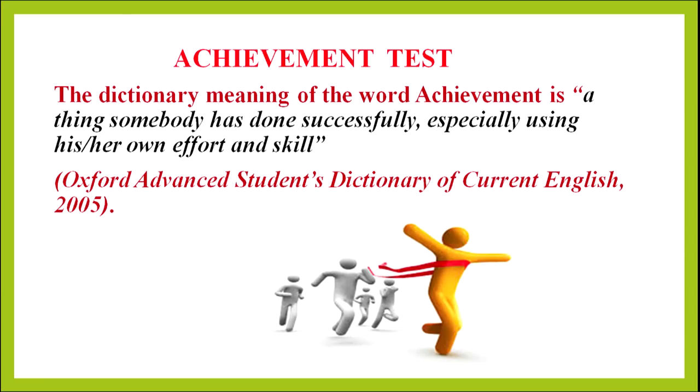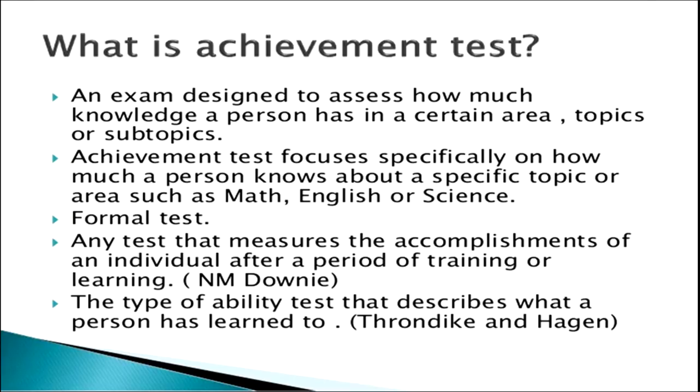We will discuss about achievement test. The dictionary meaning of the word achievement is a thing somebody has done successfully, especially using his or her own effort and skill — quoted in Oxford Advanced Students Dictionary of Current English, 2005. An achievement test is an exam designed to assess how much knowledge a person has in a certain area, topics or subtopics. It focuses specifically on how much a person knows about a specific topic or area such as math, English or science. It is a formal test — any test that measures the accomplishments of the individual after a period of training or learning, as given by Downey. The type of ability test that describes what a person has learned, as said by Thorndike and Hagen.